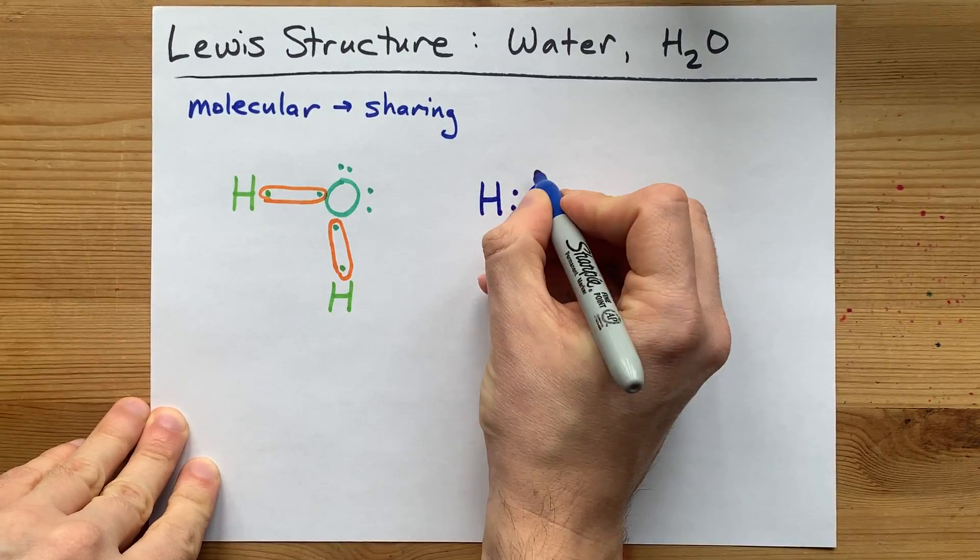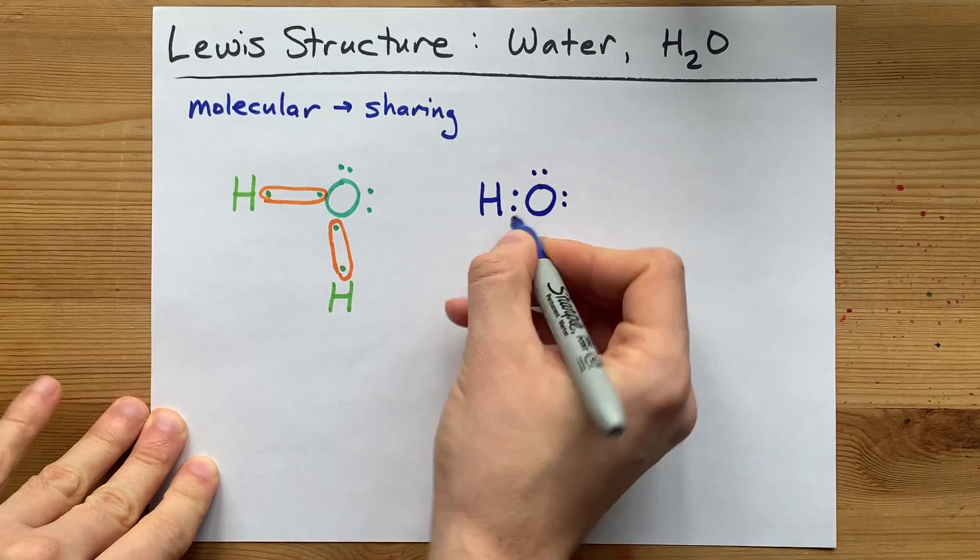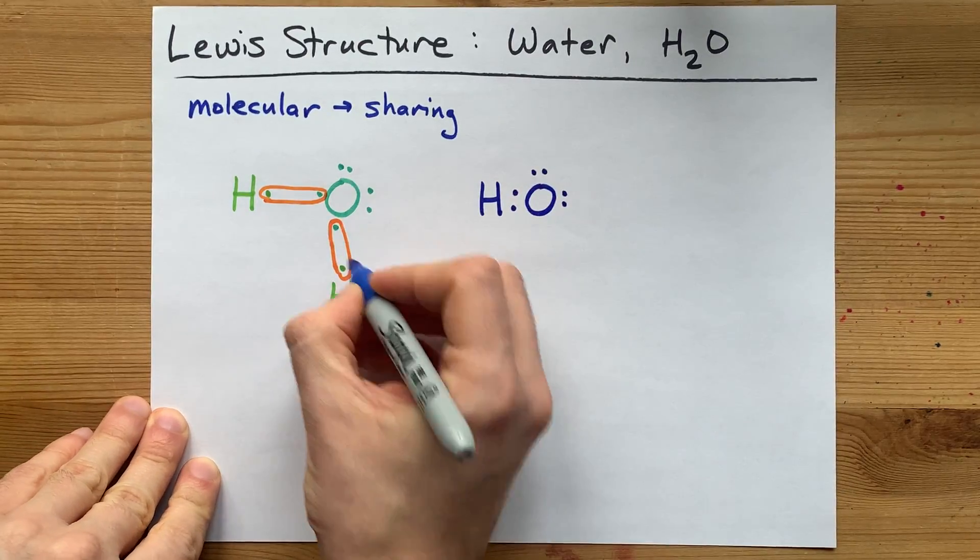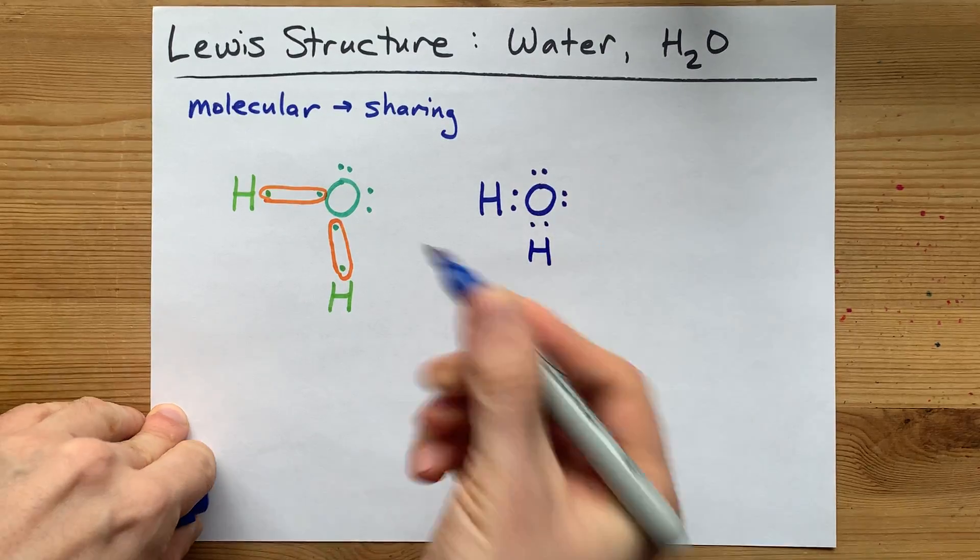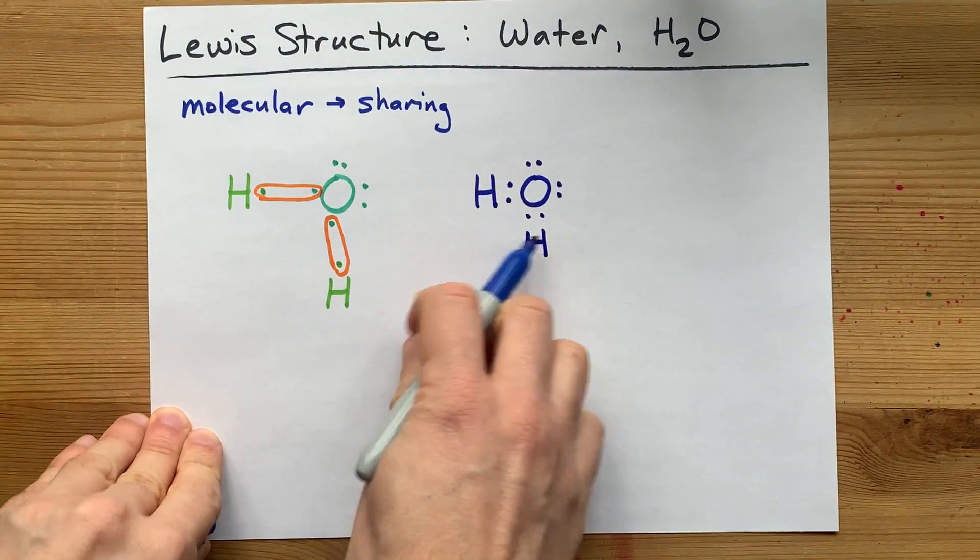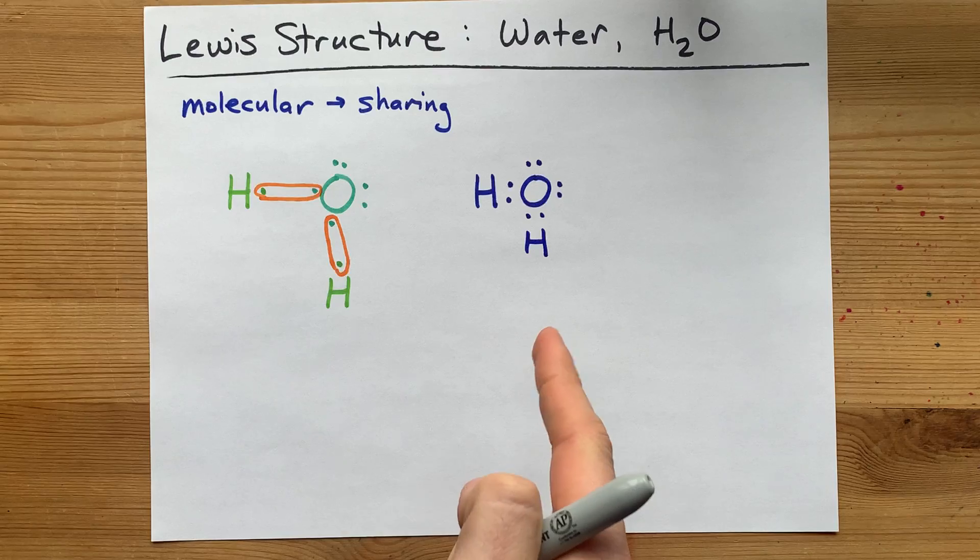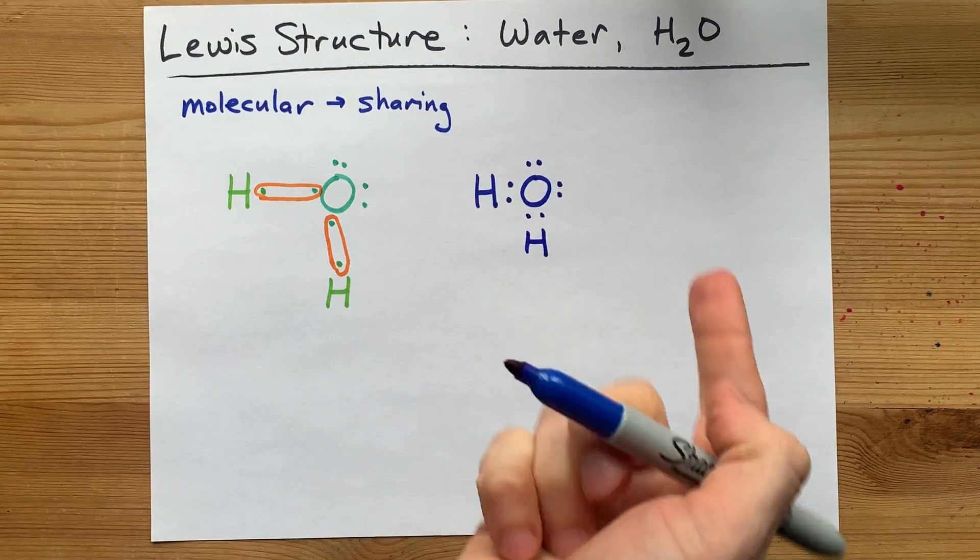Now, oxygen also had four electrons that didn't get involved with bonding at all, and an extra two bonded with that hydrogen. There. Now it's clear that oxygen has eight electrons, and each of the hydrogens has two.